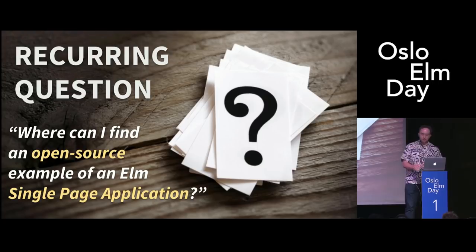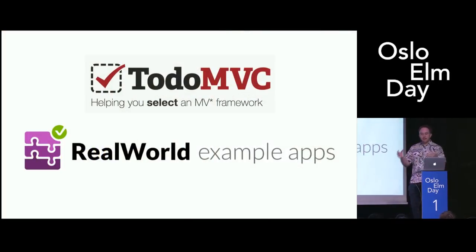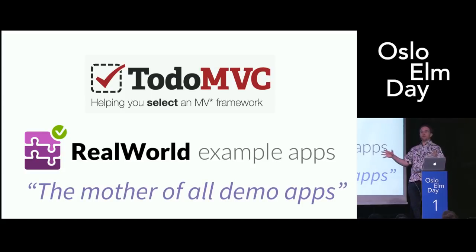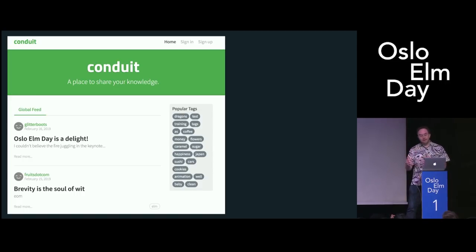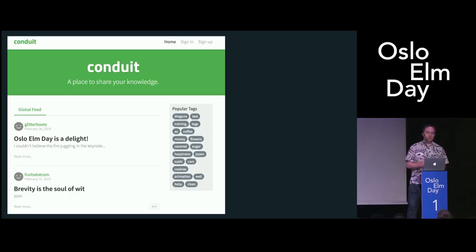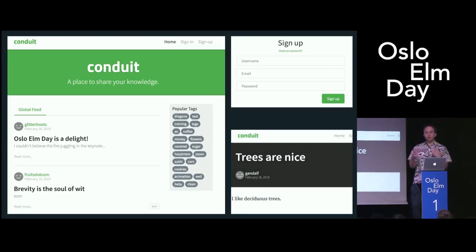So I kept getting this recurring question and I only had TodoMVC to point people to. Then I found out about this other thing: the Real World Example Apps. Real World is similar to TodoMVC but kind of bigger in scope — its tagline is 'the mother of all demo apps.' Basically it is a single page app with a bunch of different pages and features. It's called Conduit — it's sort of a pun on Medium, like a medium clone. The idea is you can write articles or posts, edit them, sign in, sign up, filter by tags, follow people, favorite articles, and see a feed of just your favorites or the people you're following. There's a really solid amount of functionality there.